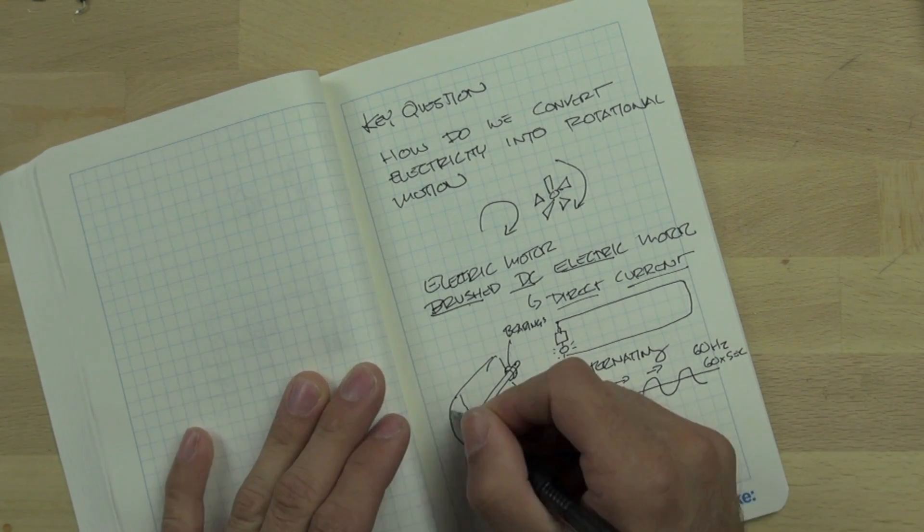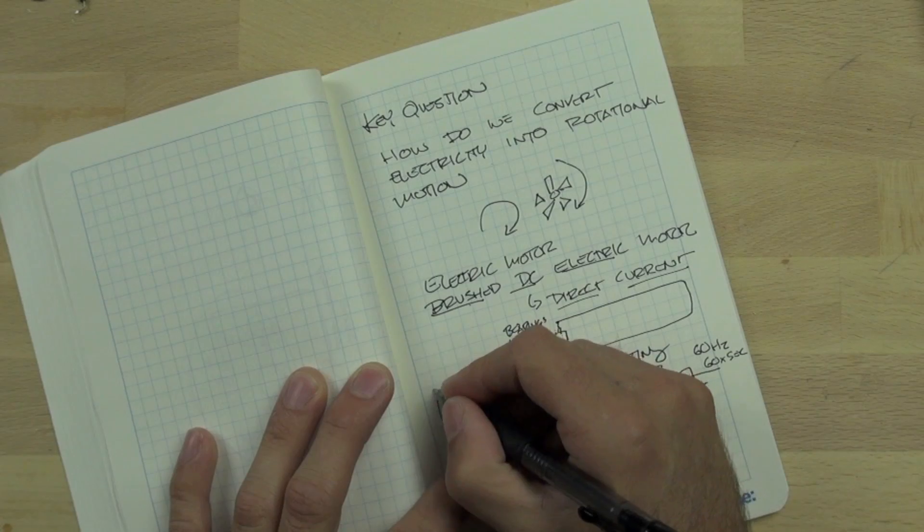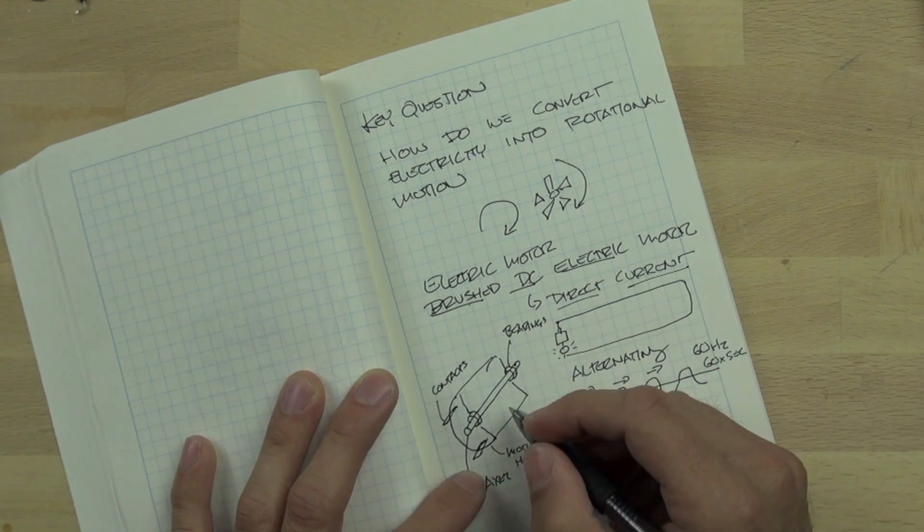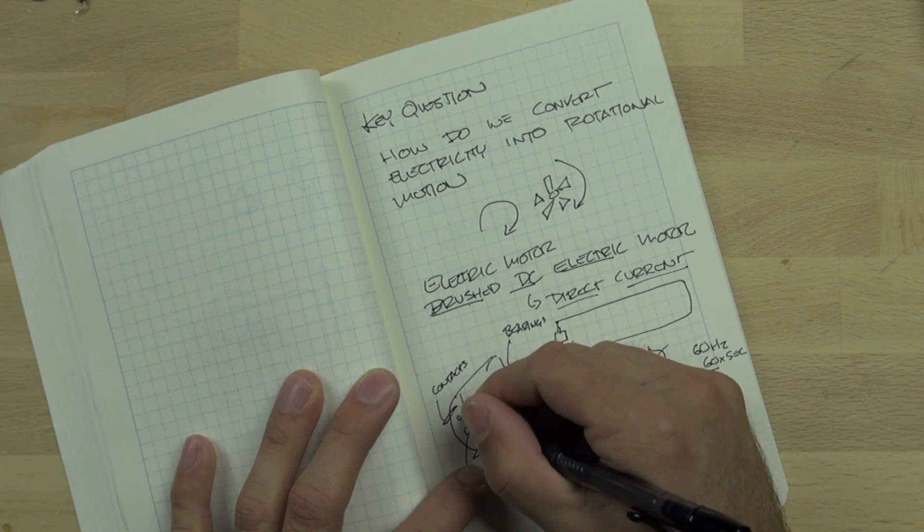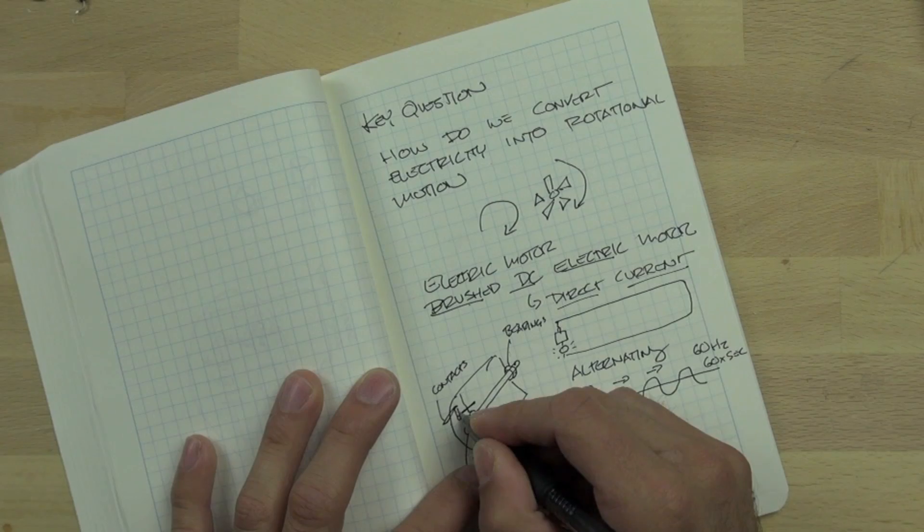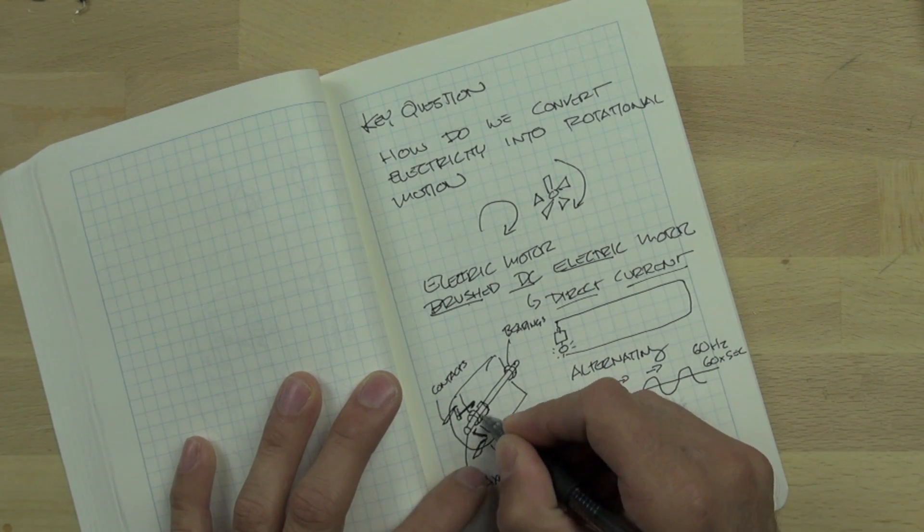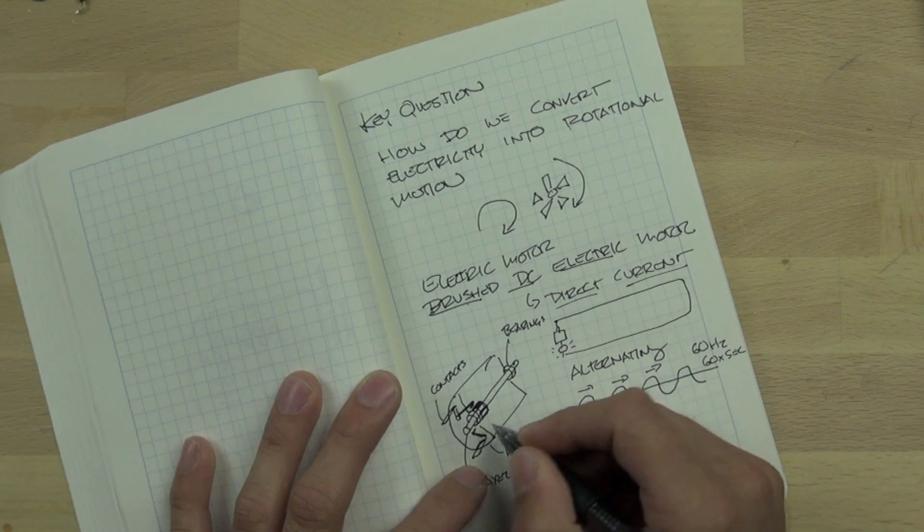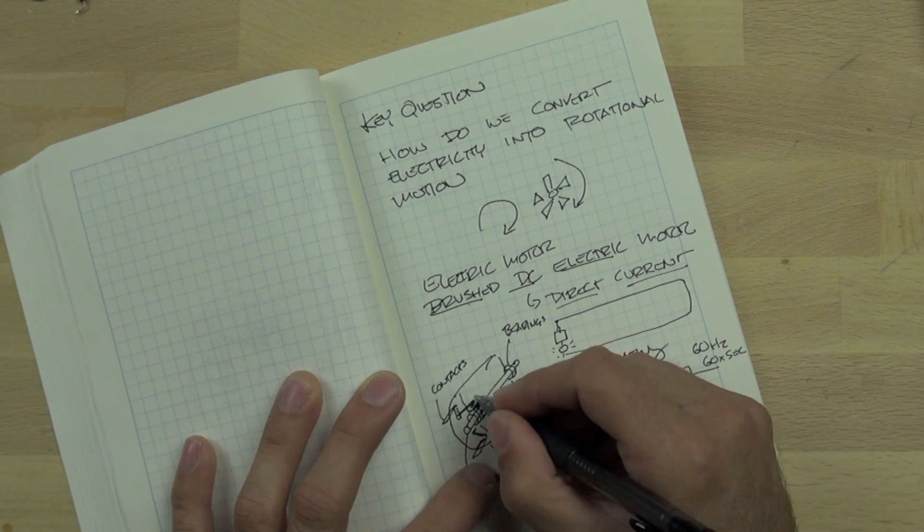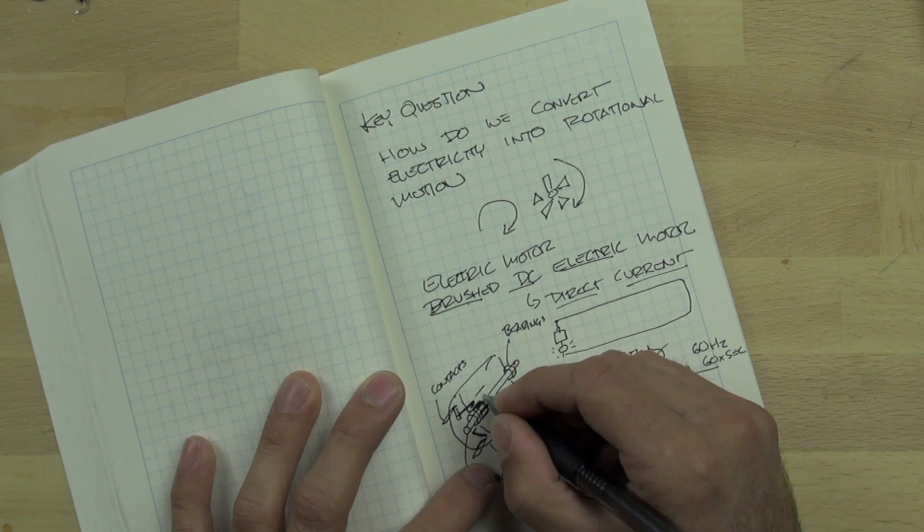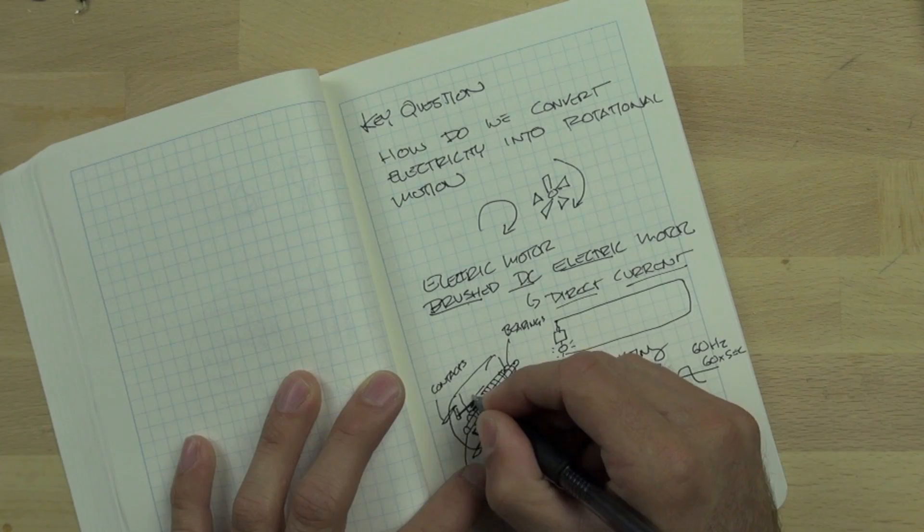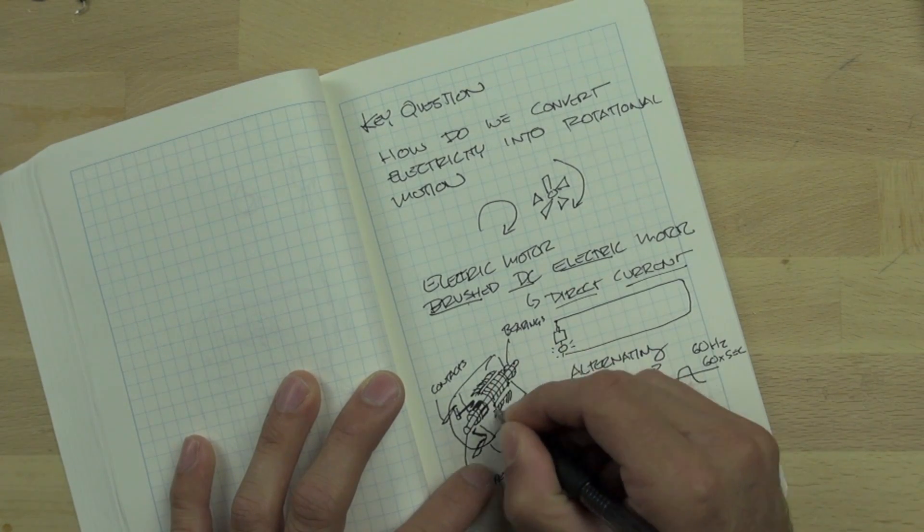And on the outside of the motor there are these two contacts. And those two contacts conduct electricity down inside the motor to two pins. And those pins are connected to copper springs which have carbon contacts on them and those push against the commutator. The commutator is a little drum at the top of the axle. And that drum is divided into sections and it conducts electricity down to the field.